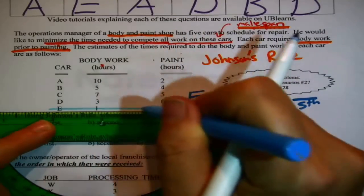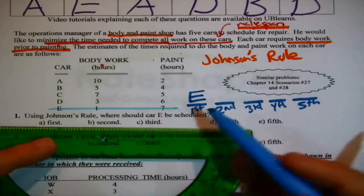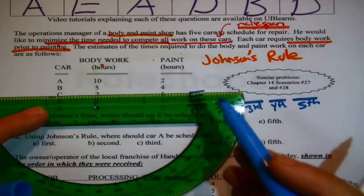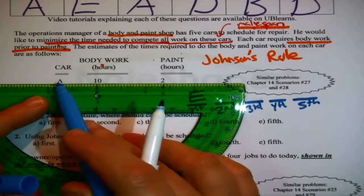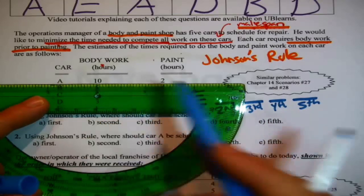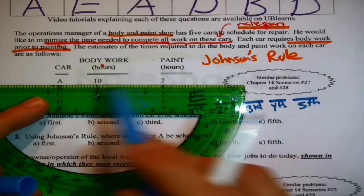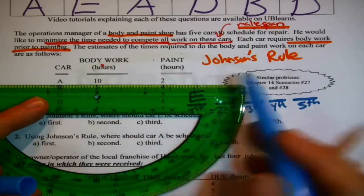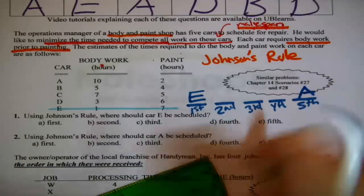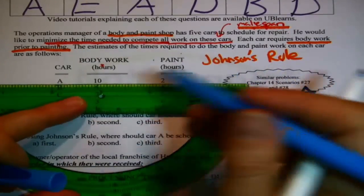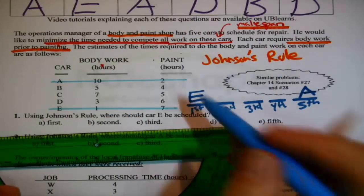Now we have scheduled E, meaning that we can lightly mark it off the list. Now what? Repeat. Look for the smallest number. Smallest number of those remaining is that two right there. Who does it belong to? A. Time to schedule A. Where to schedule A? Which column is the two in? It's in the second column. That means take A and push it as far to the back as possible. Right now, last place is wide open. That's where A goes.